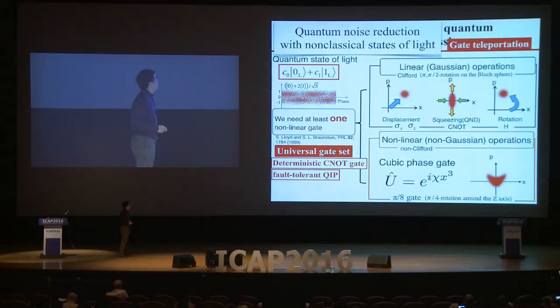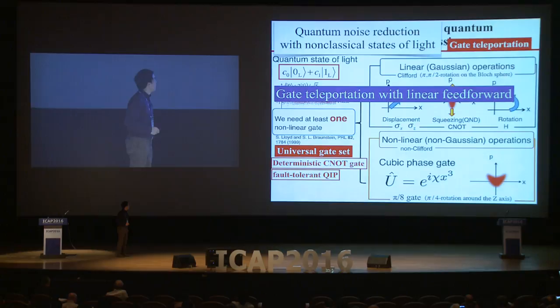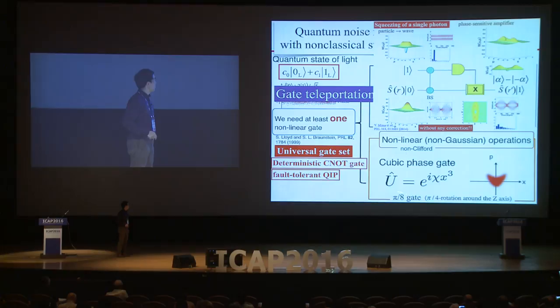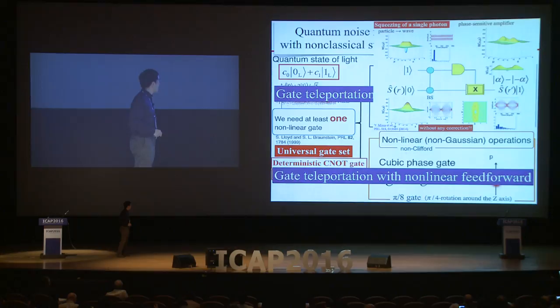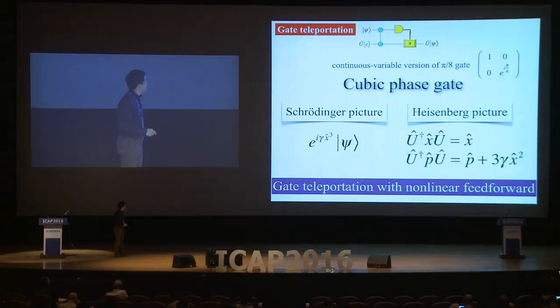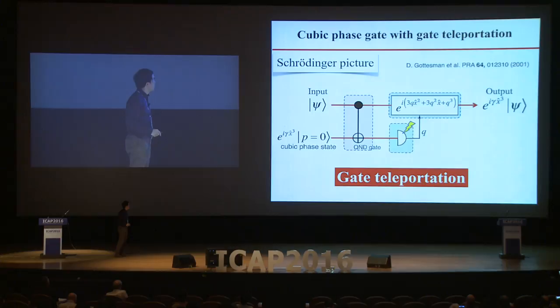More precisely, for linear or Gaussian operations we make gate teleportation with linear feed-forward — and we already did that. For non-Gaussian operations, we use gate teleportation with non-linear feed-forward. Today I will talk about the cubic phase gate, which means non-linear feed-forward.